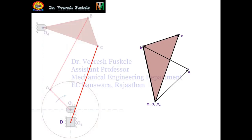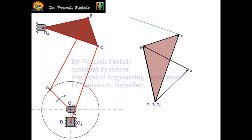To get the velocity of point D and locate it in the velocity diagram, we have link CD. We draw the velocity vector of link CD perpendicular to link CD from point C in the velocity diagram. Since we don't know the direction and magnitude of the velocity of link CD, we just draw the velocity vector from point C.